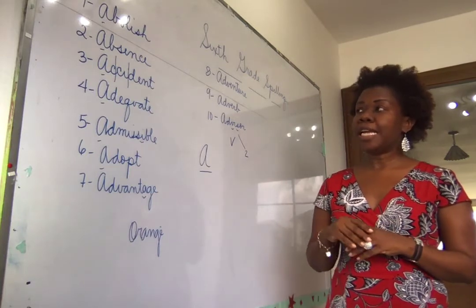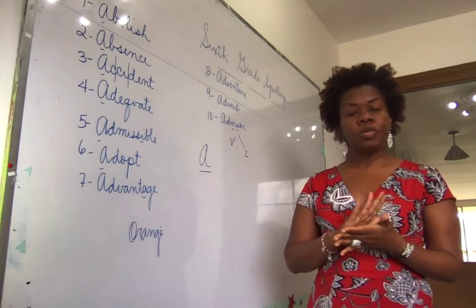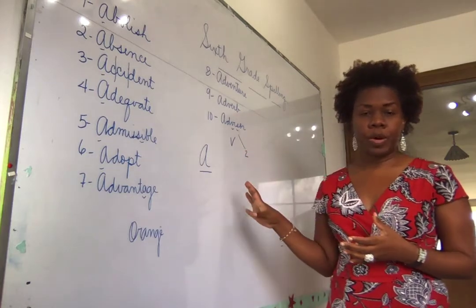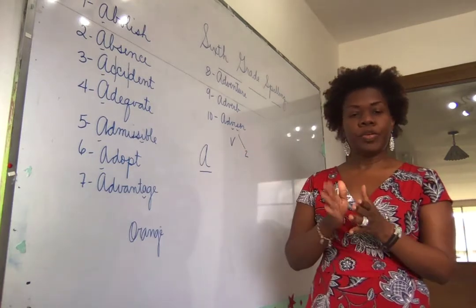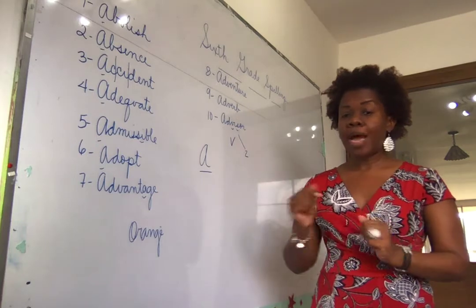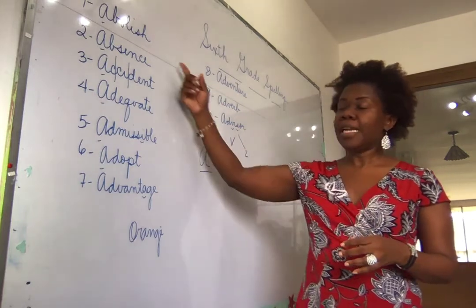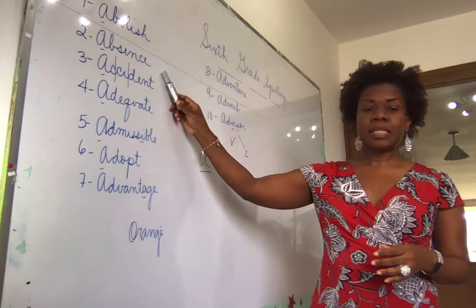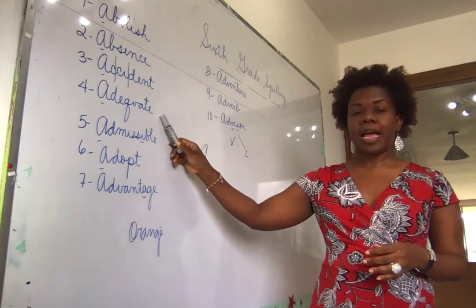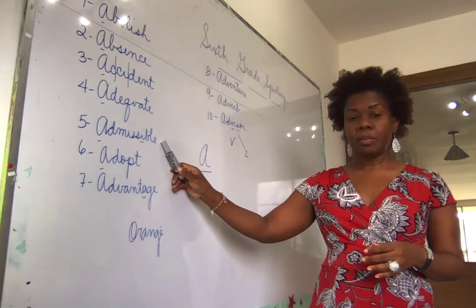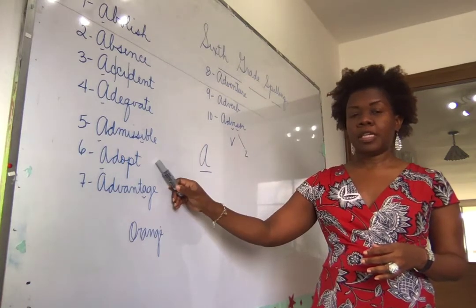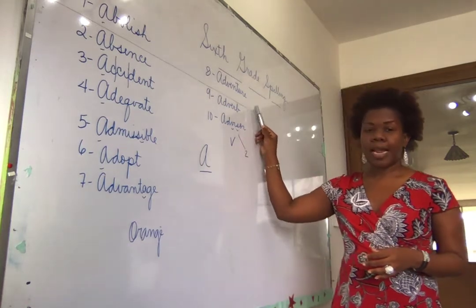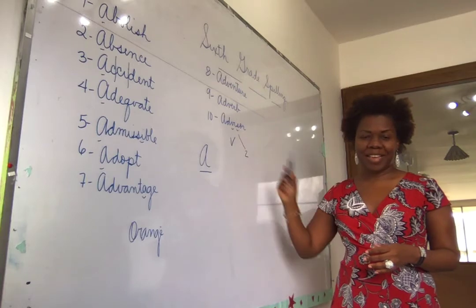So the work you need to turn in is to tell me the amount of syllables in each of these words. And in order to do that, you need to know how they're pronounced. One last time quickly: abolish, absence, accident, adequate, admissible, adopt, advantage, adventure, adverb, advisor.